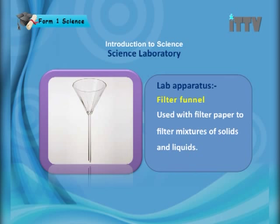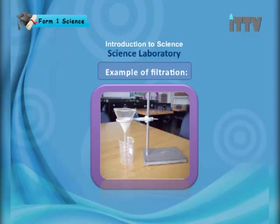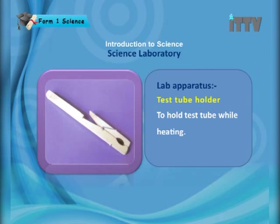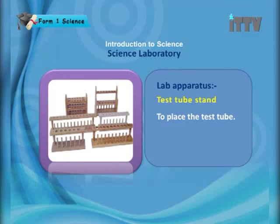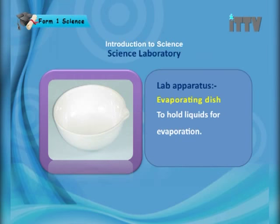The filter funnel is used with filter paper to filter mixtures of solids and liquids. For example, if you have water with salt mixed in, using the filter funnel and filter paper will filtrate them — this is an example of filtration using a retort stand. The test tube holder is used to hold the test tube while heating so you don't burn your hand. The test tube stand is used to place test tubes. A spatula is used to transfer small amounts of solid. The evaporating dish is used to hold liquids for evaporation.